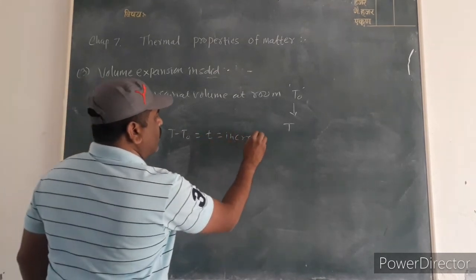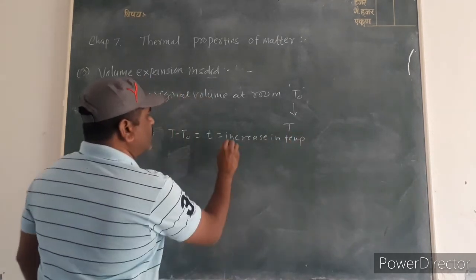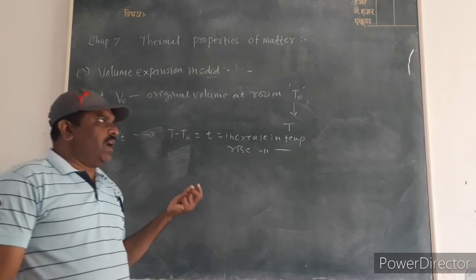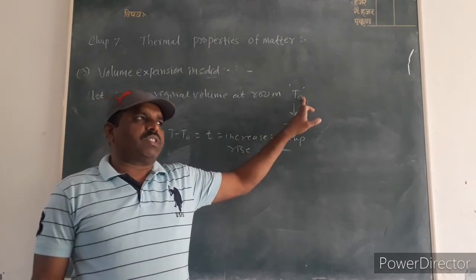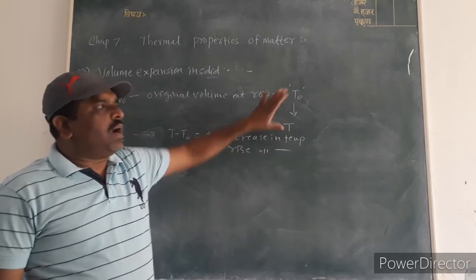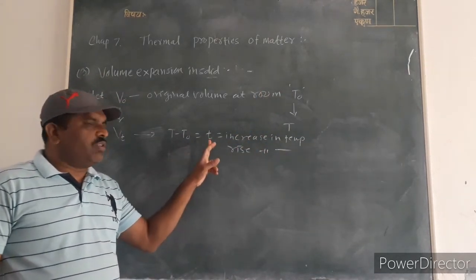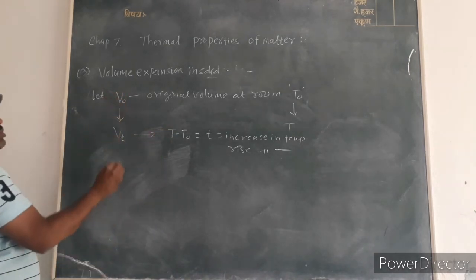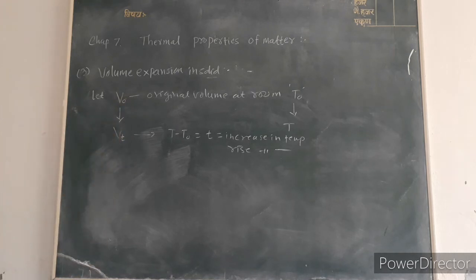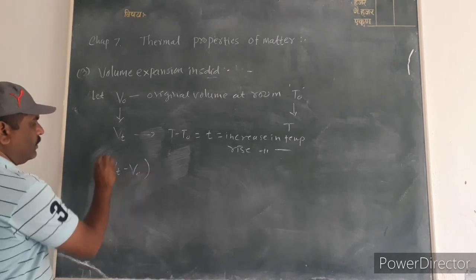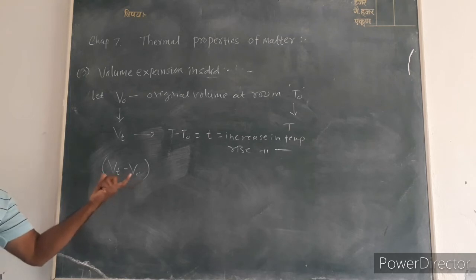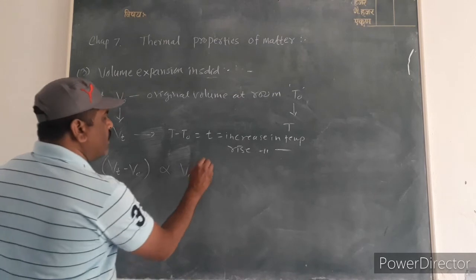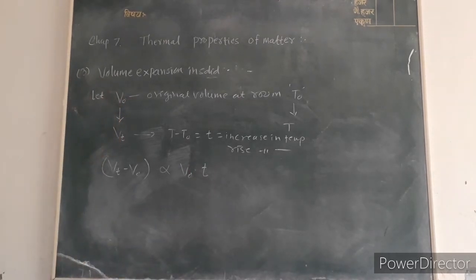This is called the increase in temperature or rise in temperature. Due to the change in temperature, the volume of the body also increases from V0 to Vt. It is experimentally found that the increase in volume, Vt minus V0, is directly proportional to the original volume and the increasing temperature.